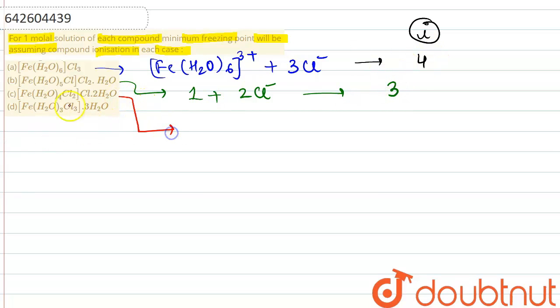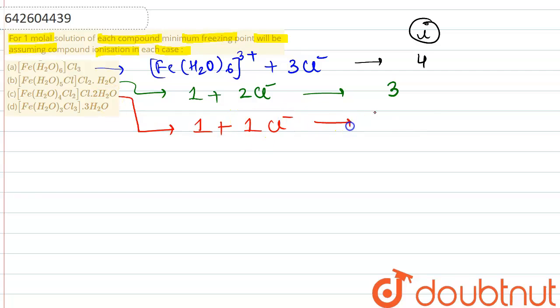For the third complex, one ion comes from the coordination sphere and one chloride ion comes from outside the coordination sphere. So the total van't Hoff factor value i = 2.